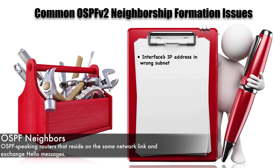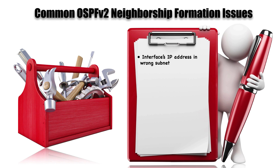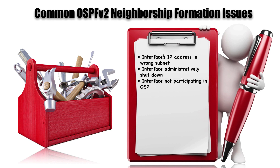For example, an interface's IP address might be in the wrong subnet — we want to make sure that the interfaces on each end of a link belong to the same subnet. We also need to make sure the interface is administratively up, because if it's shut down, we're not going to be forming a neighborship over that interface. Additionally, the interface must be participating in the OSPF routing process.